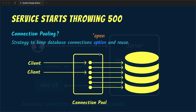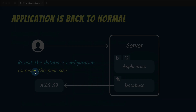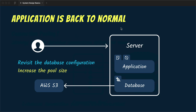There is a connection pool: whenever a client is done using a database connection, it releases it back into the pool so others can reuse it instead of opening a new connection. In our case, some clients did not close their connections, so all connections are in use and no new connection can be created — that's why we get the 500 error. This happened because we went with database defaults and didn't configure it properly. We revisit the database configuration, increase the pool size with proper values, and our application is back to normal.